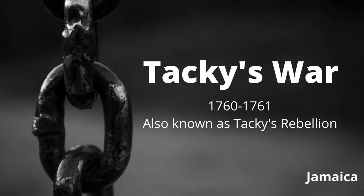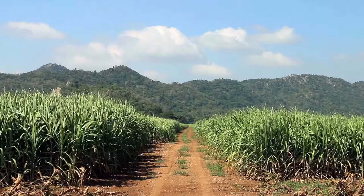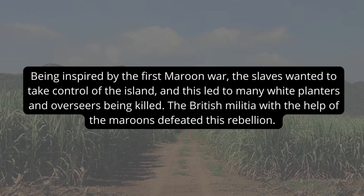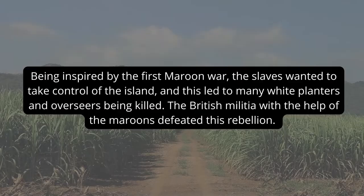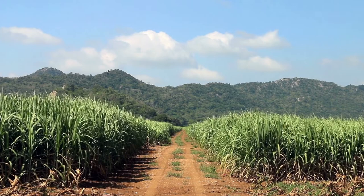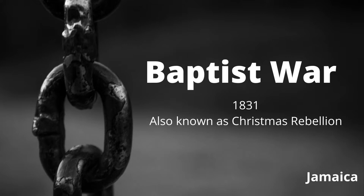Tacky's War took place in 1760–1761 in Jamaica. This uprising was led by Tacky, who was of Ghanaian descent. Being inspired by the First Maroon War, the slaves wanted to take control of the island, and this led to many white planters and overseers being killed. The British militia, with the help of the Maroons, defeated this rebellion. Tacky was killed and over 400 slaves were executed. Nevertheless, there were still a few flare-ups that continued after Tacky's death.